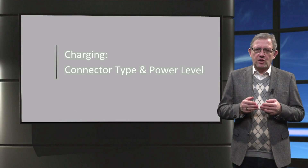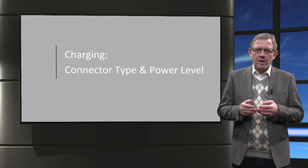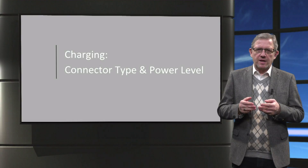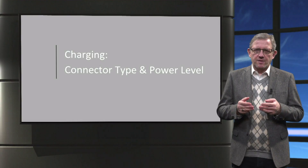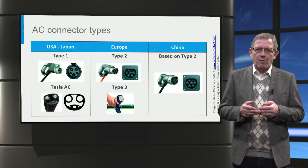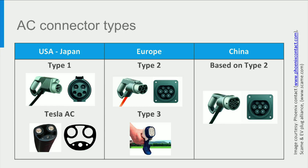AC and DC charging are characterized by the connector type and the charging power levels that can be reached. For AC charging, Type 1 connector is commonly used in the United States and Japan, while Type 2 and the less common Type 3 connectors are used in Europe. Tesla uses its proprietary connector in the USA and Japan, while it uses the Type 2 connector in Europe. Other parts of the world are often adopting the Type 2 connector, as it can work with both 230 volt single phase and 400 volt three-phase connections.